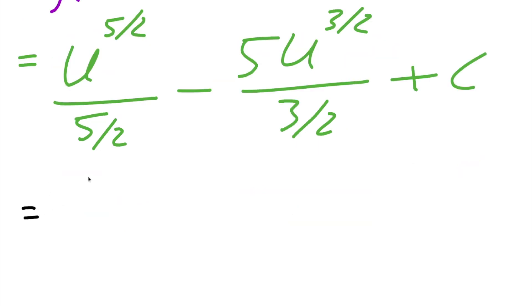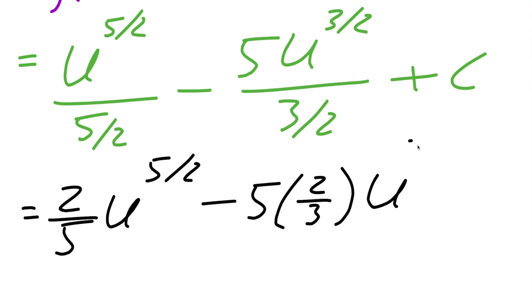We can clean this up a little bit. So instead of dividing by 5 divided by 2, you could say 2 divided by 5u raised to 5 divided by 2 minus, you could do 5 times 2 thirds. So 5 parentheses 2 thirds, close parentheses, u raised to 3 divided by 2 plus c.